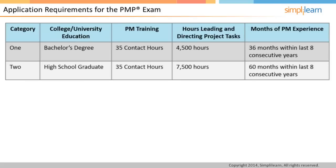As shown in the table, a professional needs to have at least 4,500 hours of project management experience along with a bachelor's degree. A professional whose highest formal education is a high school degree will require 7,500 hours of project management experience. The experience of 36 months within the last eight years implies that those 4,500 hours of project management experience should have happened within the last eight years prior to the application. Similarly, for the experience of 60 months within the last eight years, 7,500 hours of leading and directing project tasks should have happened within the last eight years.